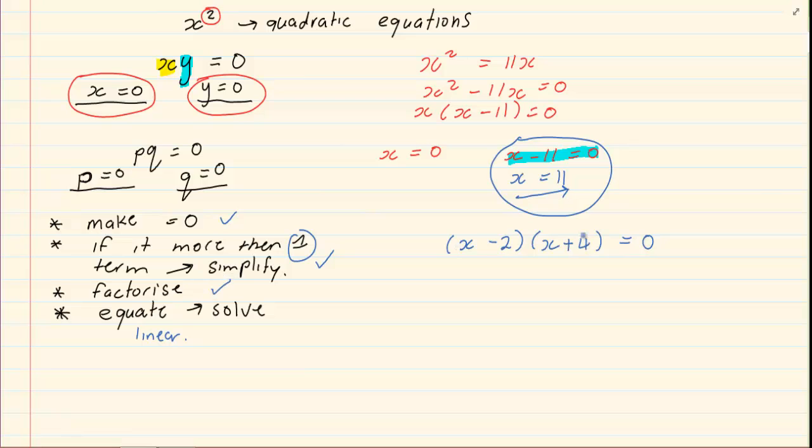Now factorize means make brackets, but it's already factorized for you. So all you have to do is solve. Equate each bracket to 0. Now solve it: x is equal to 2 and x is equal to minus 4.